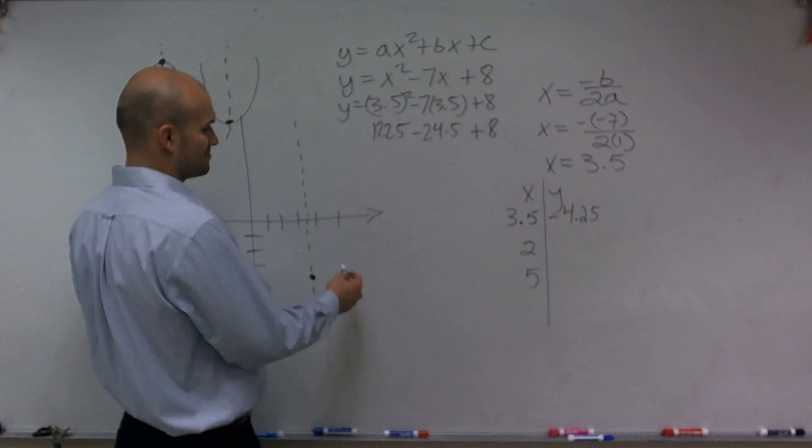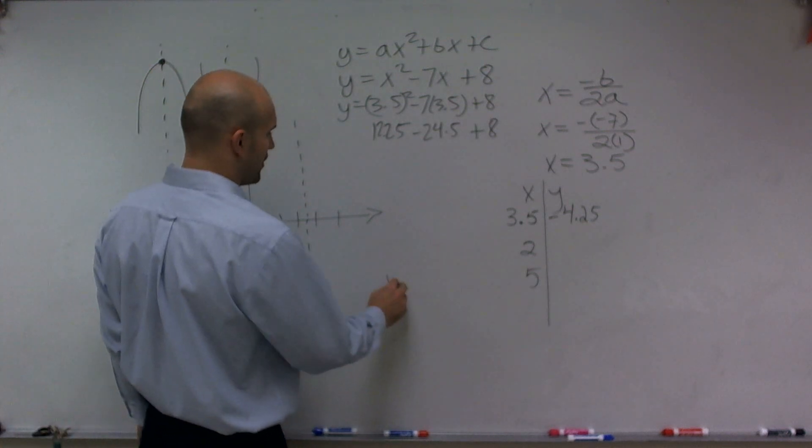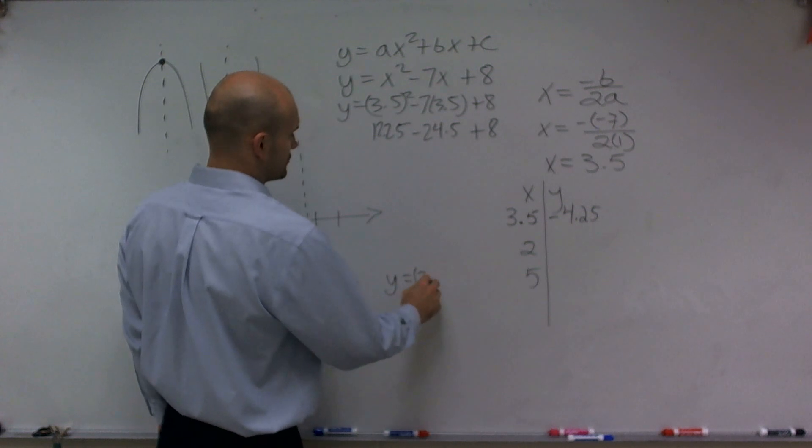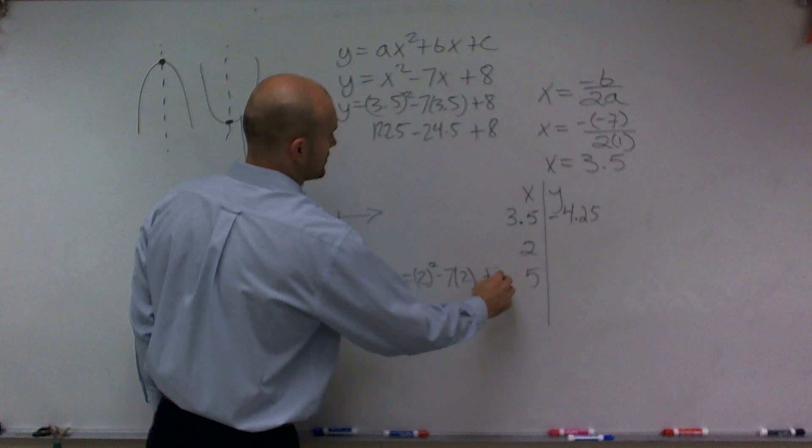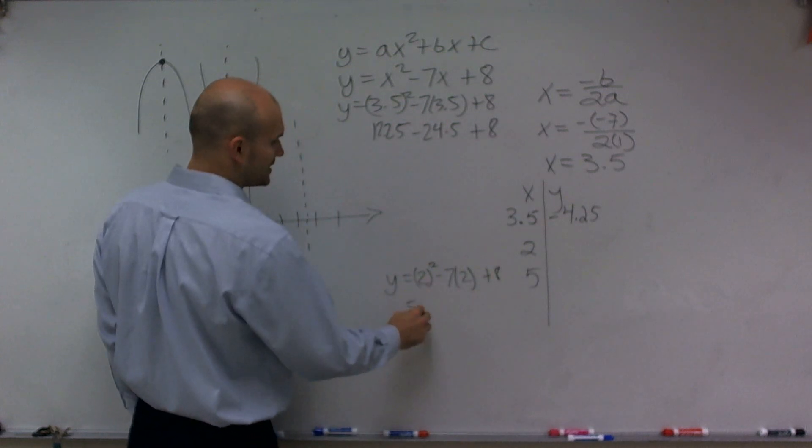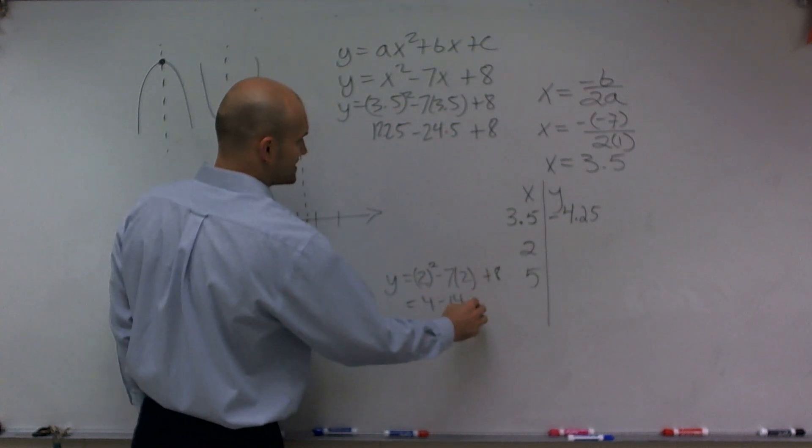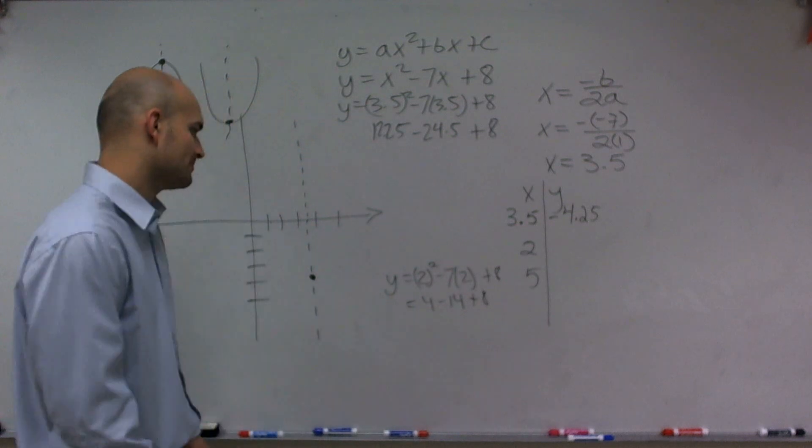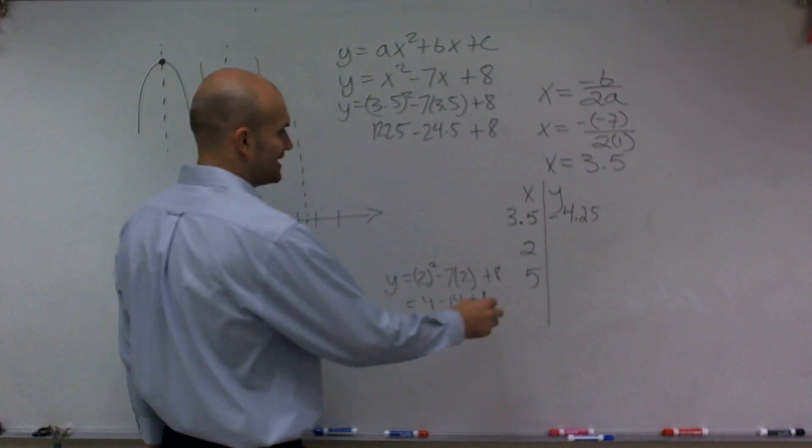So let's do 2, because 2 looks like it might be pretty simple. So I have y equals 2 squared minus 7 times 2 plus 8. Well, that equals 4 minus 14 plus 8. And it looks like you're going to have negative 2.